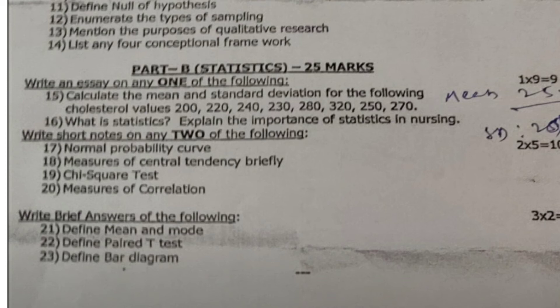Next, write short notes on any 2 of the following — each for 5 marks. You will be given 4 questions and must answer only 2. Question 17: normal probability curve. Question 18: measures of central tendency. Question 19: chi-square test. Question 20: measures of correlation. Out of these 4 questions, answer any 2.